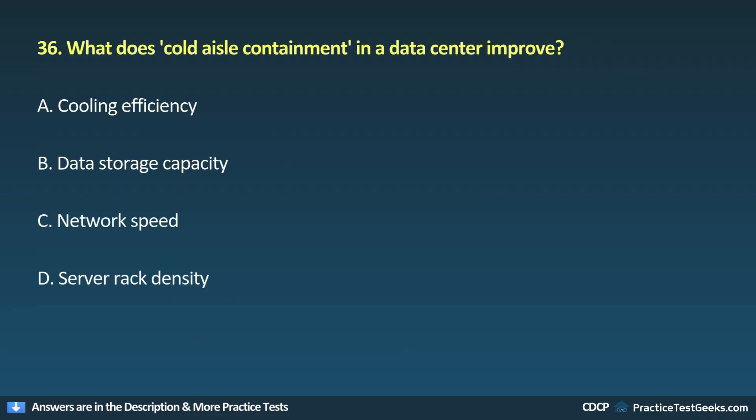Question 36. What does cold aisle containment in a data center improve? A. Cooling efficiency. B. Data storage capacity. C. Network speed. D. Server rack density.